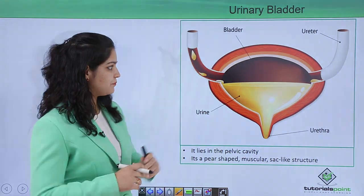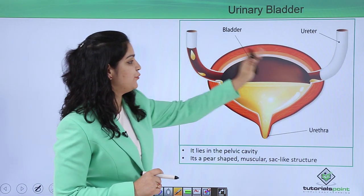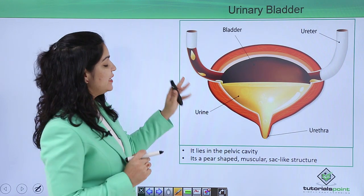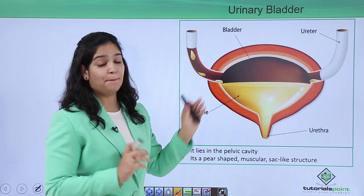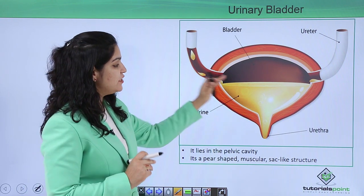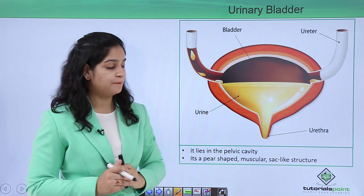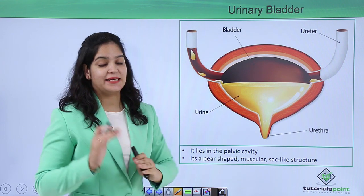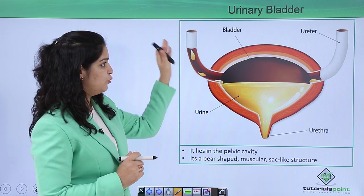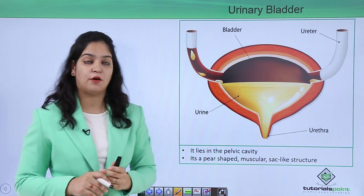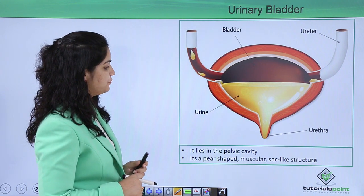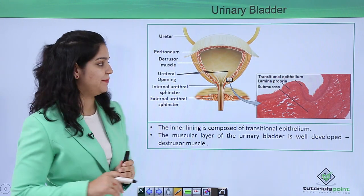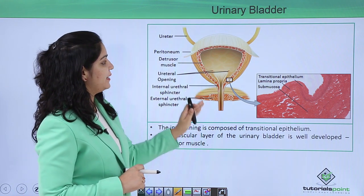Now let's talk about the urinary bladder, which is present in the pelvic cavity. It is a sac-like muscular pear-shaped structure that stores urine. The urinary bladder is connected to the kidney through a pair of ureters.